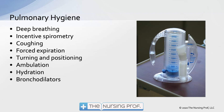Good pulmonary hygiene includes deep breathing, incentive spirometry, coughing, and forced expiration — where the patient takes a breath in and forces it out hard to mobilize secretions. Turning and positioning, ambulation, hydration, and bronchodilators are also important. These are the things we can do to try to prevent respiratory complications.